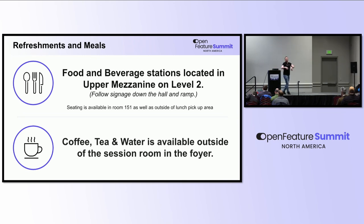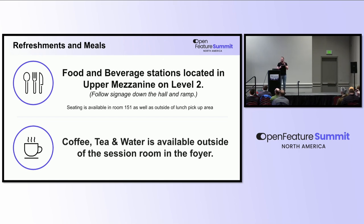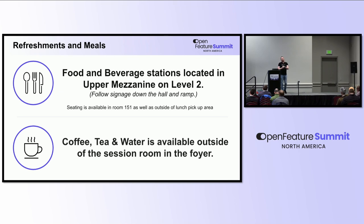Next up, because it's early and it's breakfast time, I know you're already thinking about lunch. There are food and beverage stations located on the upper mezzanine on level two — that's here. Just follow the signs and they'll show you where the seating is. If you're looking for coffee, tea, and water, it's going to be available just outside the door to the right during the morning.